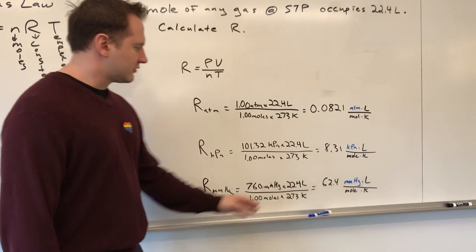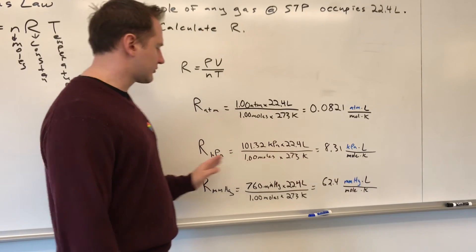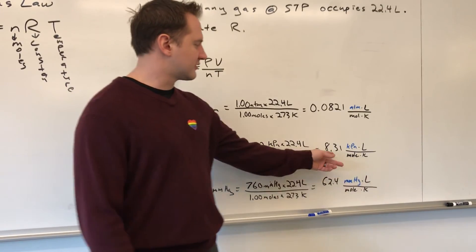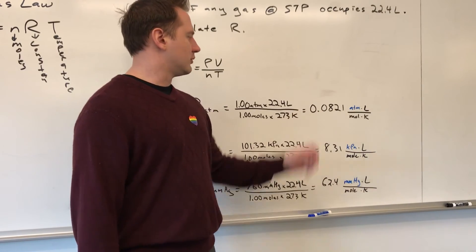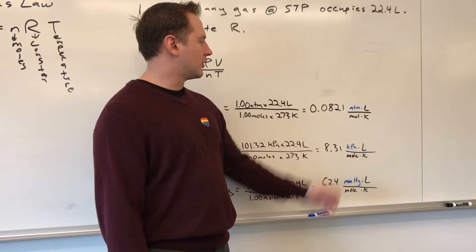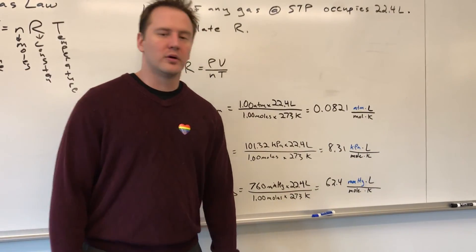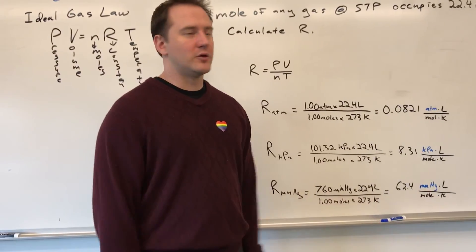And so, these values stay the same. So, like, if we're describing a gas system in kilopascals, this is going to be R all the time. You don't change it. If you're describing it in atmospheres, it would be 0.0821. And if it were in millimeters of mercury, it would be 62.4. That would be the value for R.